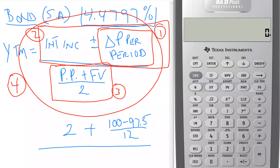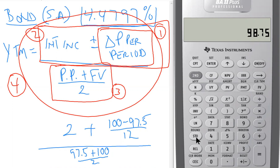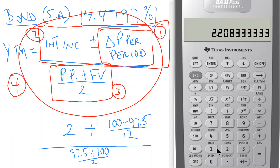Step 3 — calculating the denominator: the purchase price was $97.5 plus the face value of $100, divided by two, giving us the average of $98.75. We'll store this in memory register 2. Step 4 — putting it all together: we recall the numerator (2.208333) and divide by the denominator (98.75), which gives us 0.02236.